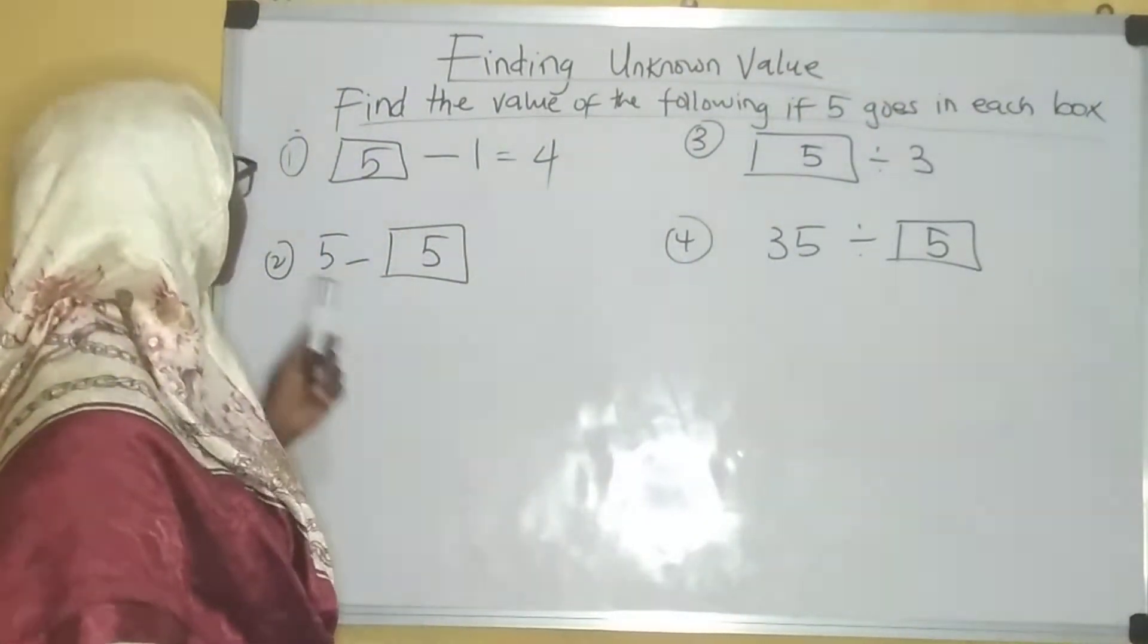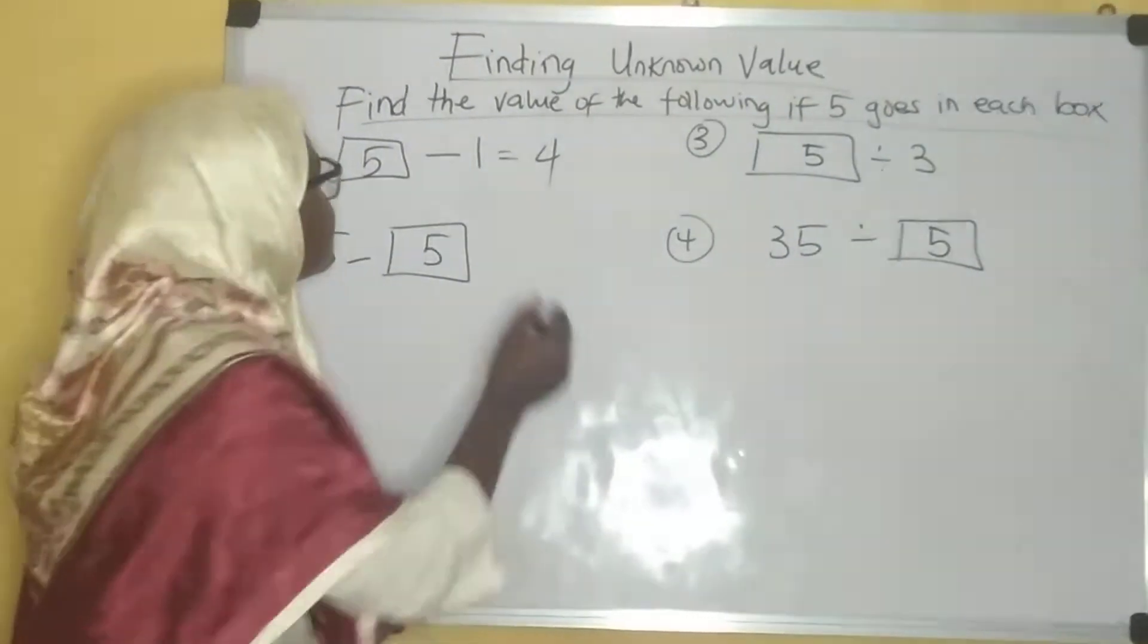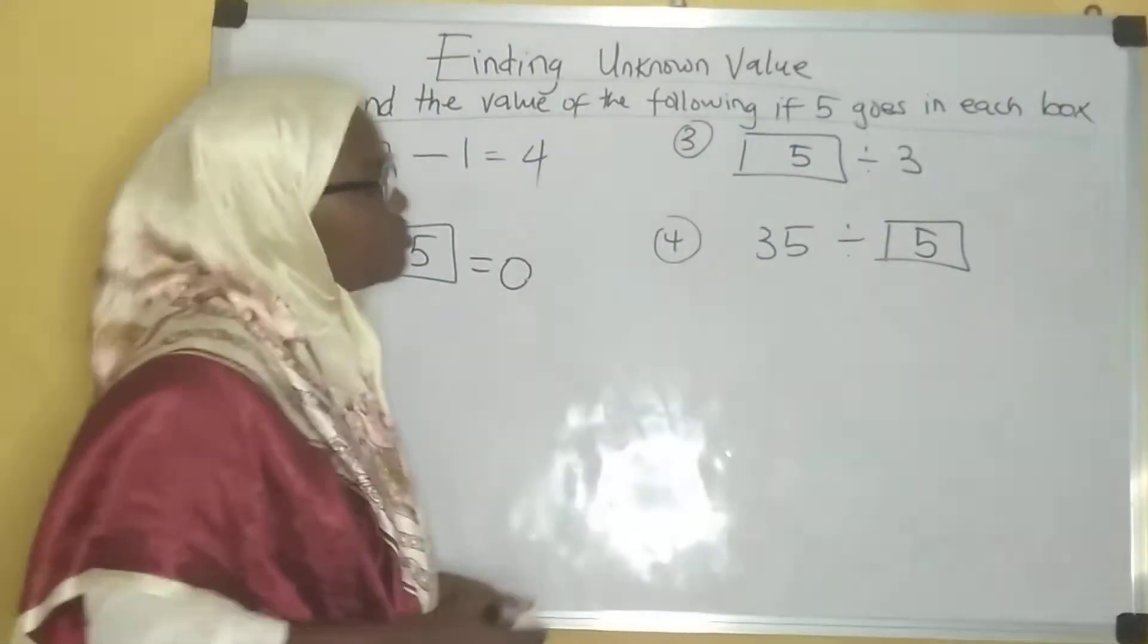Now look at the next example. Five minus five would be what? Zero. You can see that this one too is easy peasy.